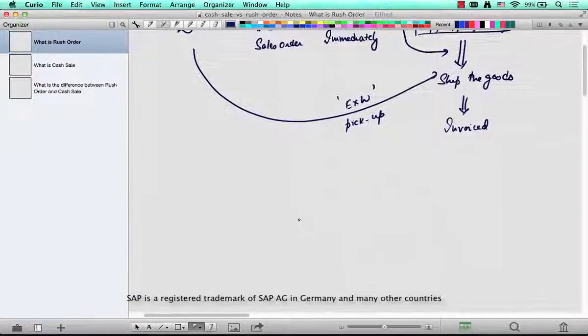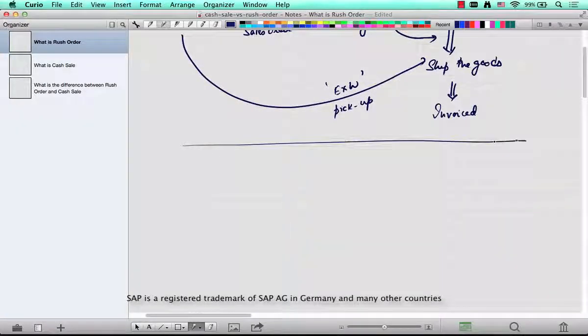This is done in SAP like this: the document type to be used is rush order RO. As soon as you save this, you create an order of type RO. When you save it, automatically a delivery will be created